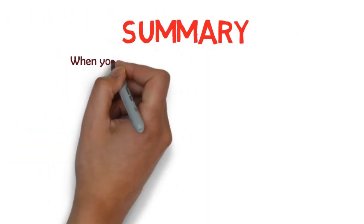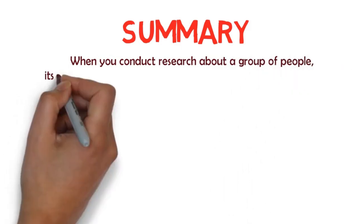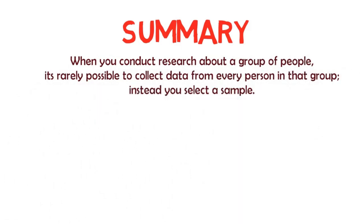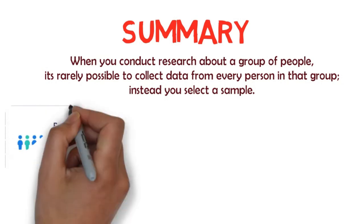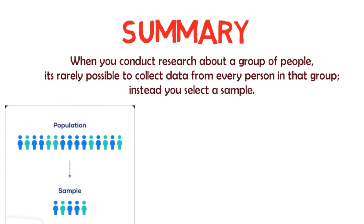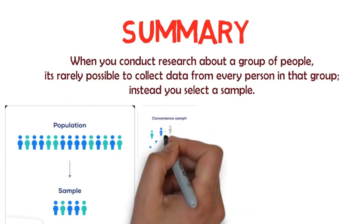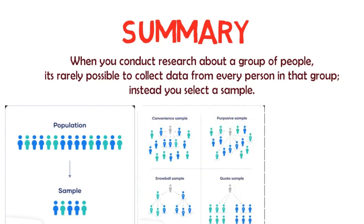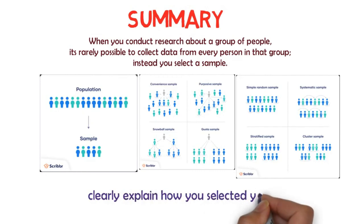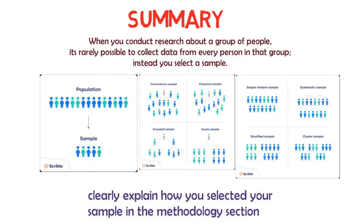In summary, when you conduct research about a group of people, it's rarely possible to collect data from every person in that group. Instead, you select a sample — the group of individuals who will actually participate in the research. To draw valid conclusions from your research, you have to carefully decide how you will select a sample that is representative of the group as a whole. You should clearly explain how you selected your sample in the methodology section of your research or thesis.